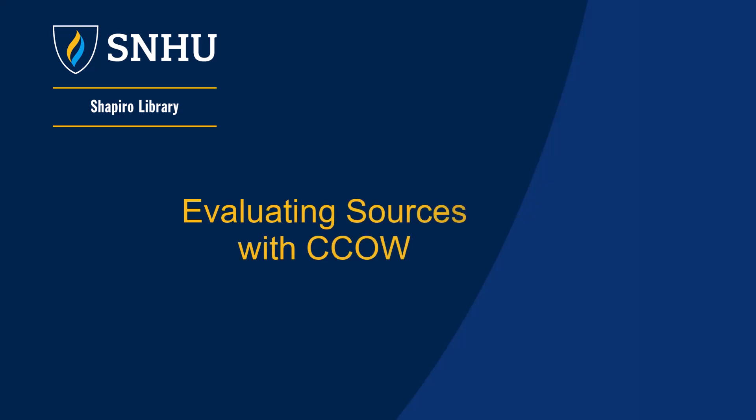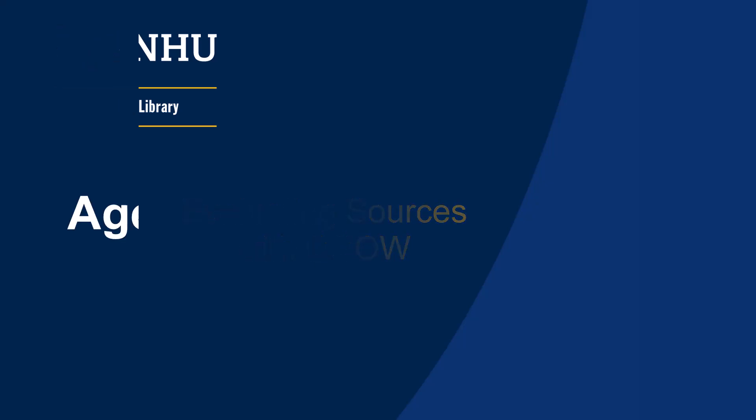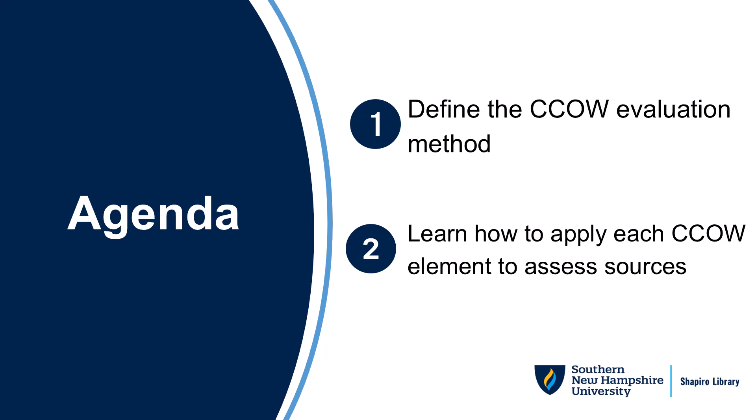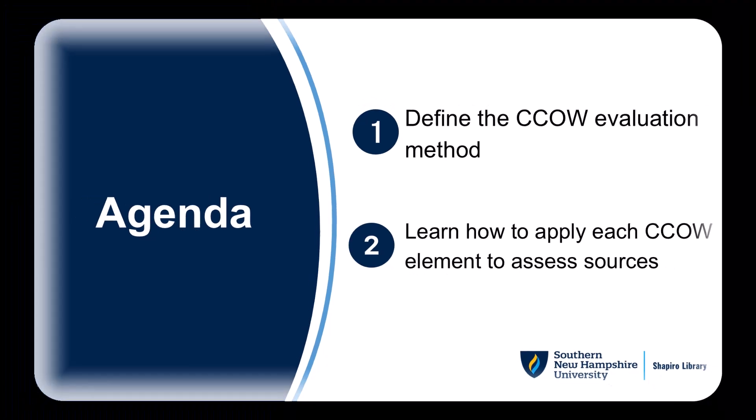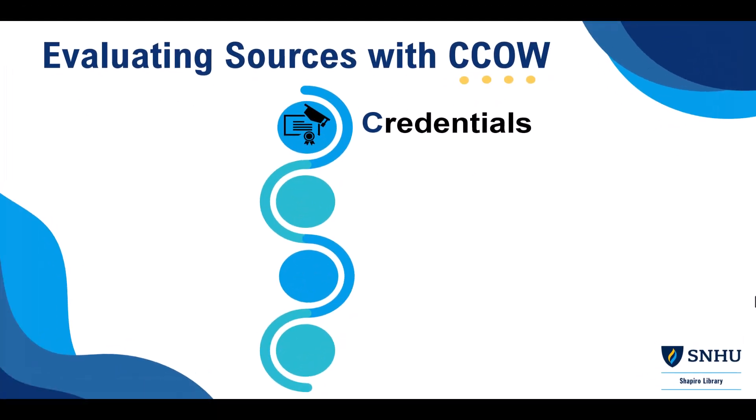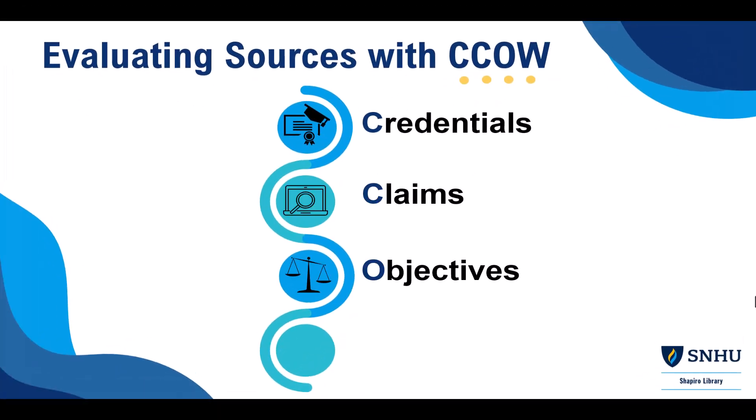Hello and welcome to our quick tutorial on the CAO evaluation method. By the end of this video, you'll know what the CAO evaluation is and how to use it to check if sources are reliable. CAO stands for Credentials, Claims, Objectives, and Worldview. This approach encourages you to dig deeper and actively investigate the credibility of the information you encounter. Let's dive into each element and see how you can use them to evaluate information effectively.